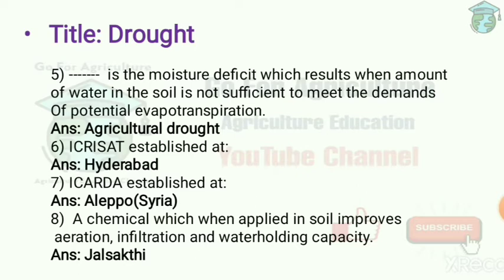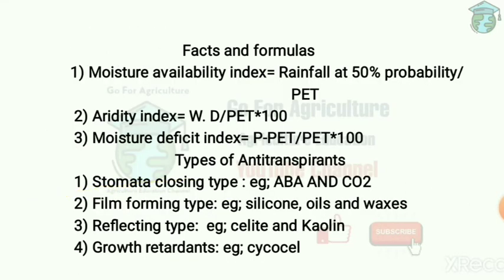Next question: a chemical which when applied to soil improves aeration, infiltration, and water holding capacity is called Gel Shakti. It is a product applied to improve these three factors: aeration, infiltration, and water holding capacity.